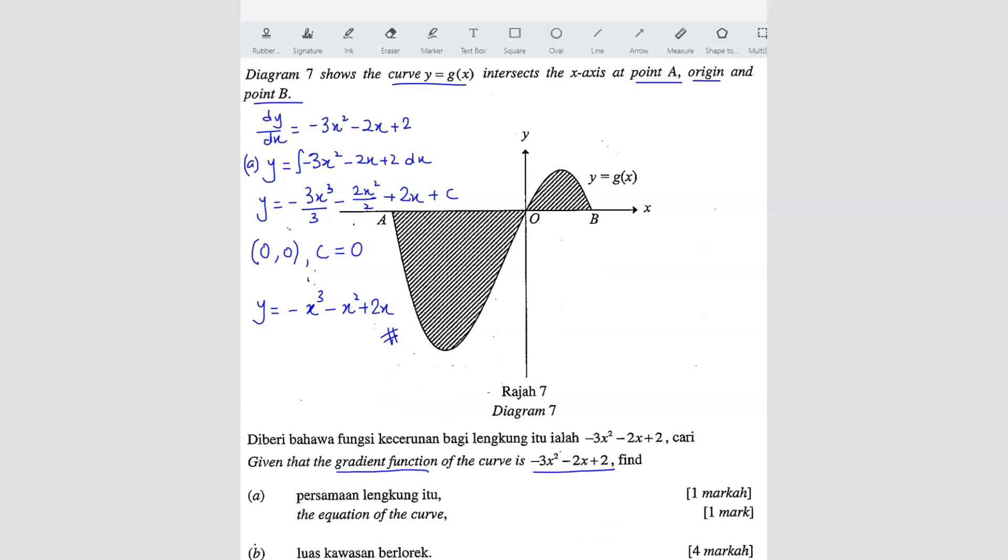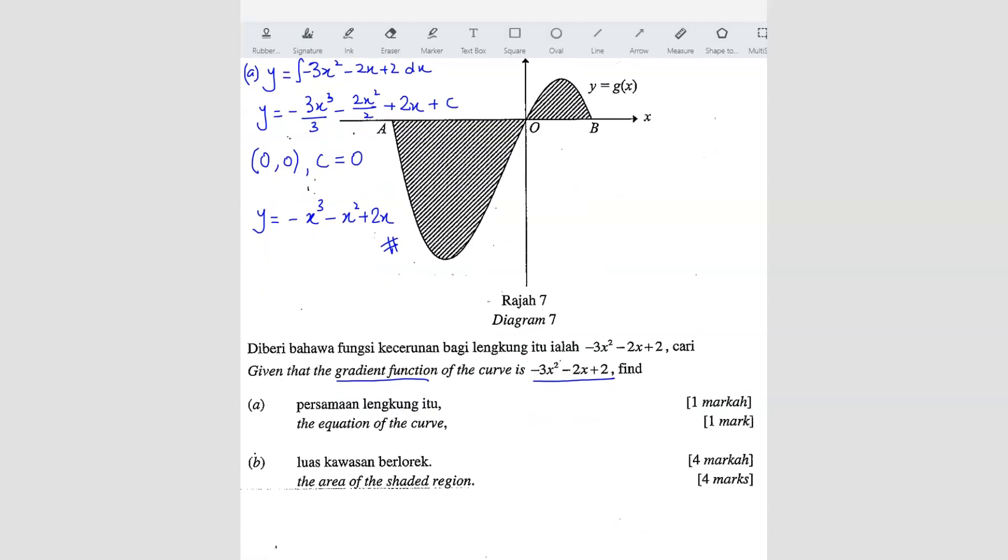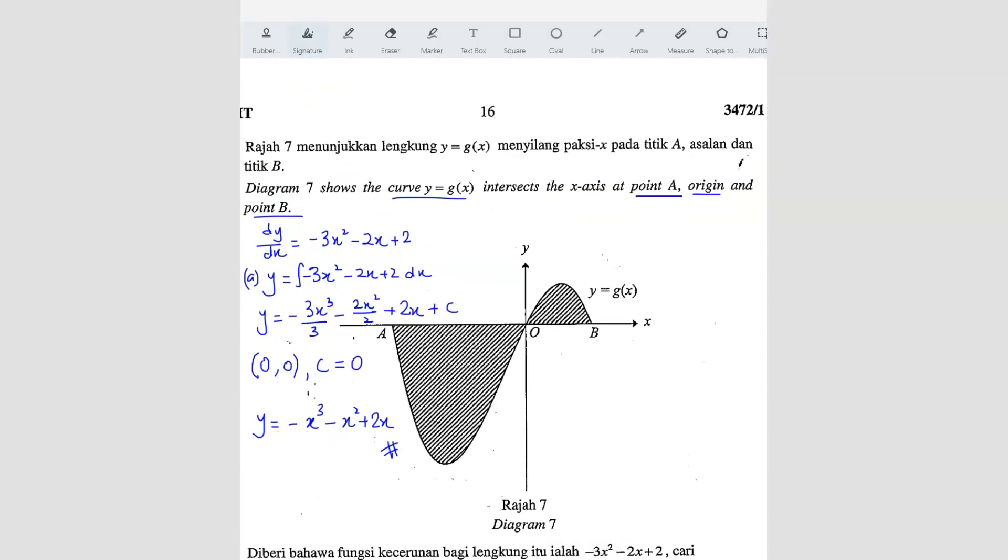Next, we want to find question B. Find the area of the shaded region. So shaded region, there are two different regions here. The first part here is on the positive side. The second part here is on the negative side. So we're going to do them separately. But before we can even start, we need to know the x-intercept first so that we know the range of the integration.